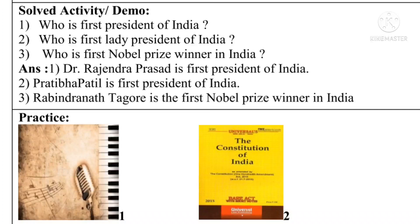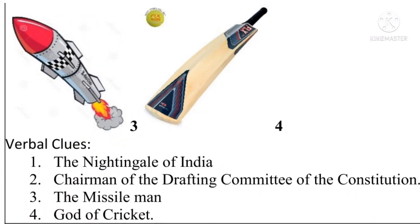A picture of a mike is given, which represents the field of music — so who is the Bharat Ratna awardee in music? The second clue is the Constitution of India. On the third number, there is a picture of a rocket. And on the fourth number, there is a picture of a bat and a ball. We will have to identify the Bharat Ratna awardees from each of these fields.